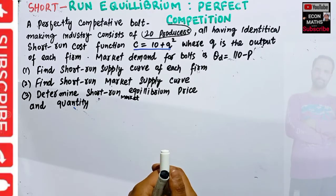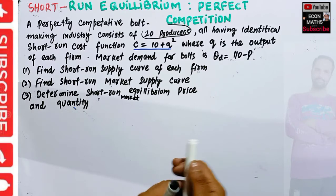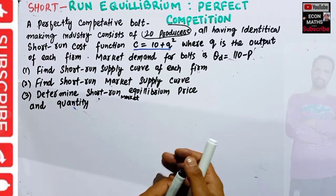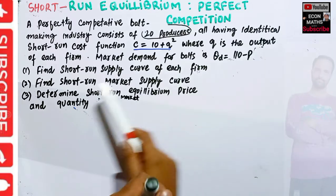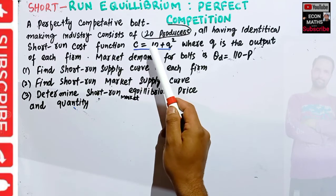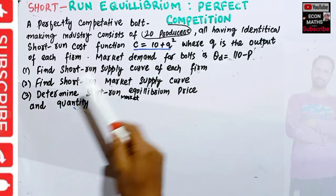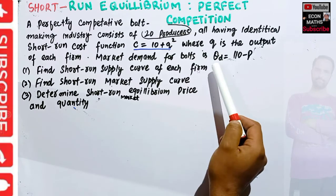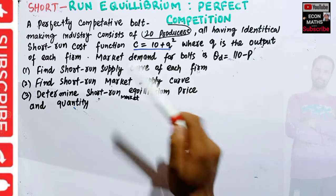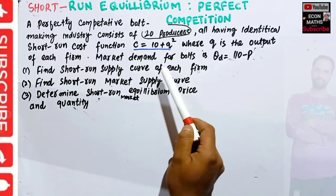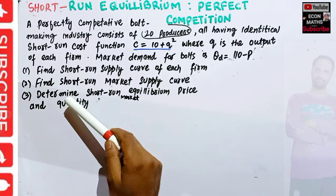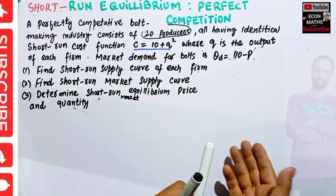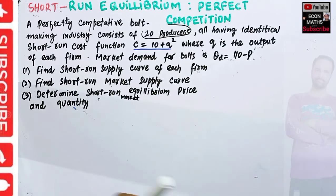In this video we will learn how to find the short-run equilibrium under perfect competition and how to find the short-run supply curve of each firm, the market supply, and how to determine short-run market equilibrium price and output. The question is: a perfectly competitive bolt-making industry consists of 20 producers all having identical short-run cost functions. Market demand for bolts is given as QD = 110 - P. We have to find the short-run supply curve of each firm, the short-run market supply curve, and the short-run equilibrium price and quantity.